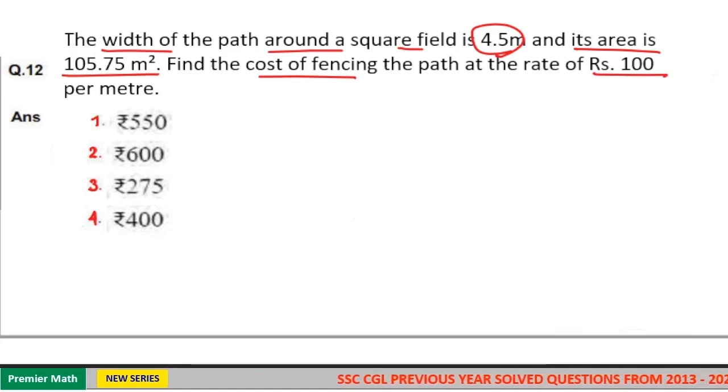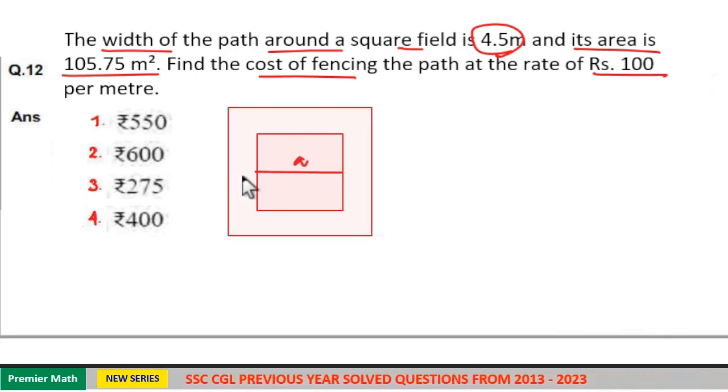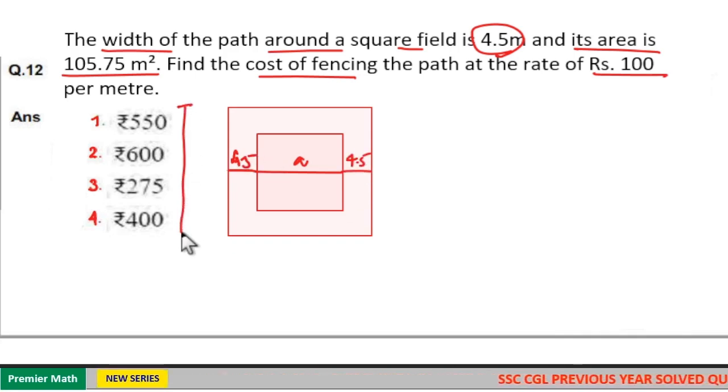Here this is the ground. Consider the ground width as a meters. Now this is the path surrounding the ground and the path width is equal to 4.5 meters. This is also 4.5 meters. Now the side length of this larger square is equal to a plus 4.5 plus 4.5, that is a plus 9.